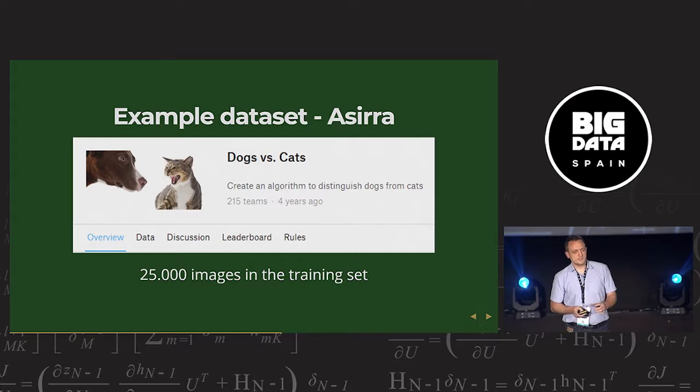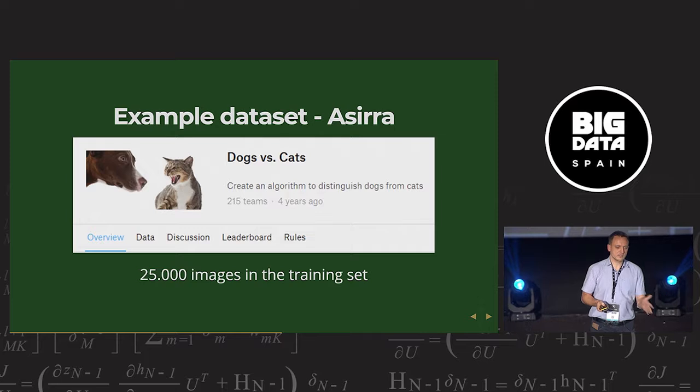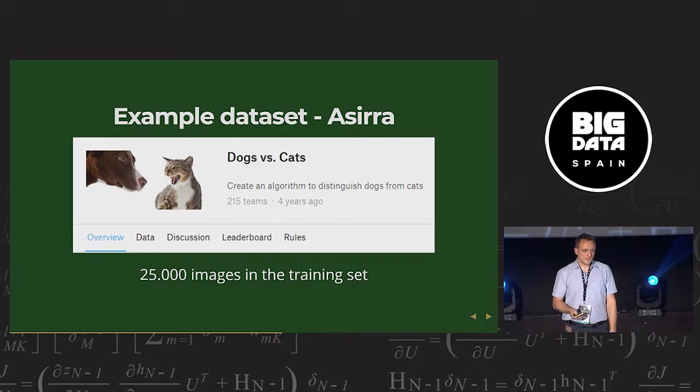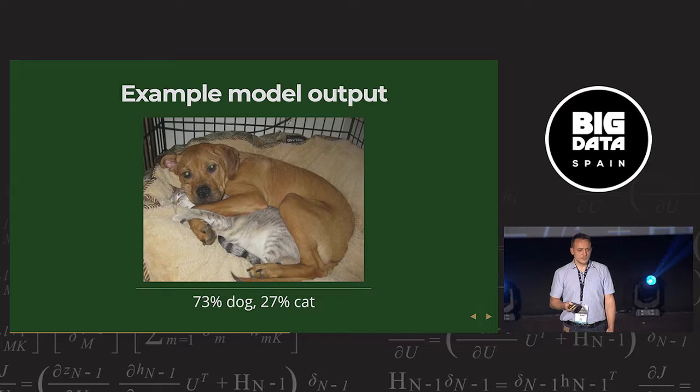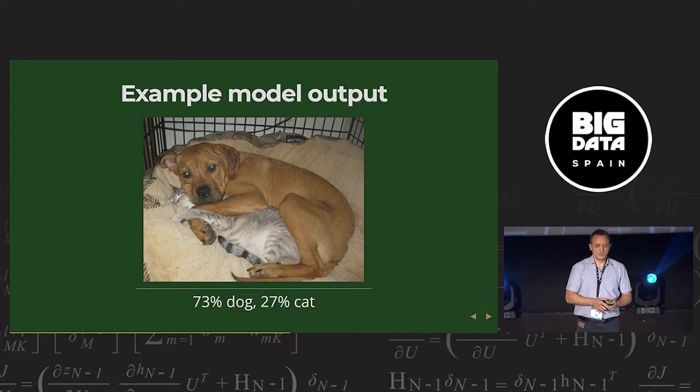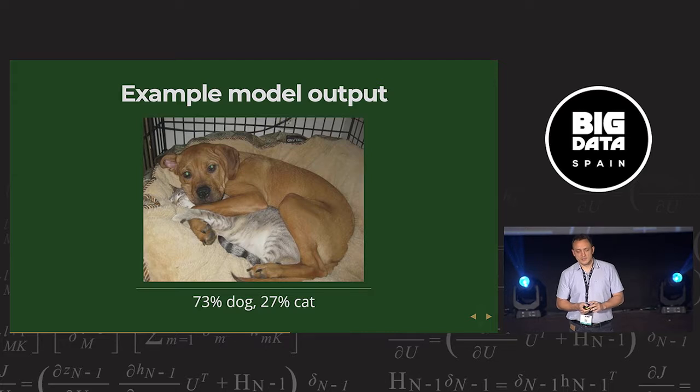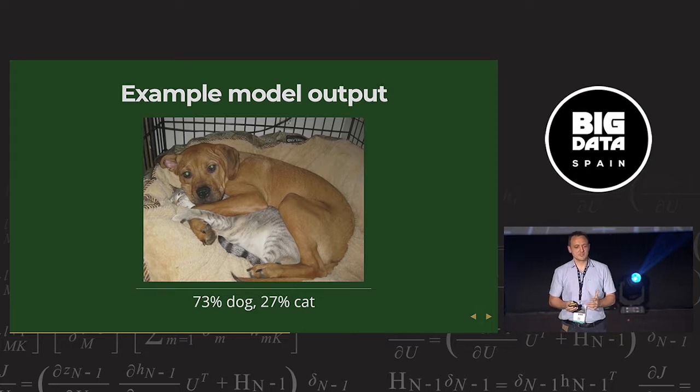The example data set is the dogs versus cats from Kaggle. There are 25,000 images in the training set. I used only 1,000 for training, testing, validation. The example output, you would get an image. And the model would say it's 73% dog and 27% cat. But we don't need two values, right? Because those have to add up to 100. So we need just one value. The P that it's a dog, that's 73%, 0.73.